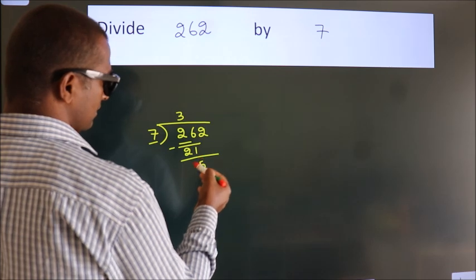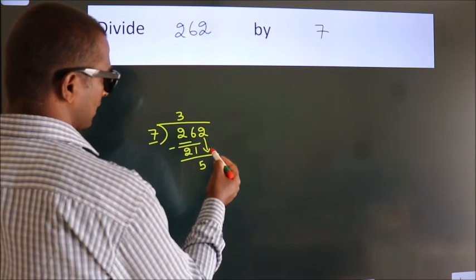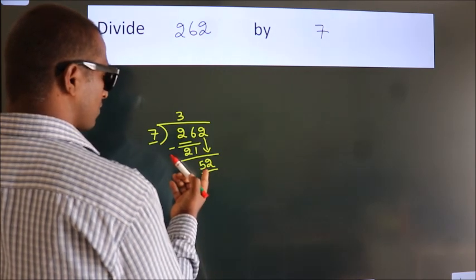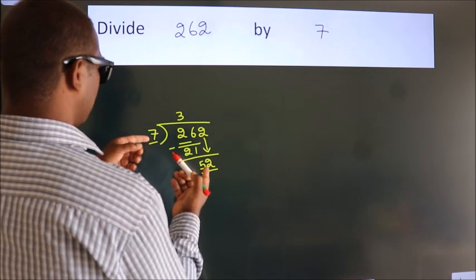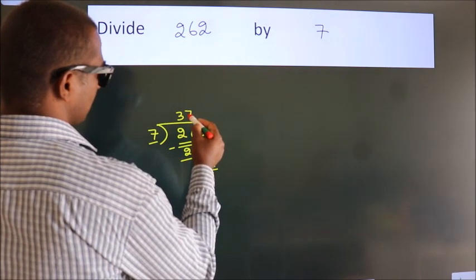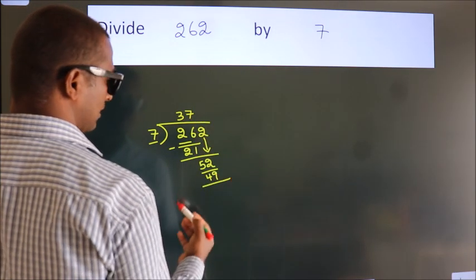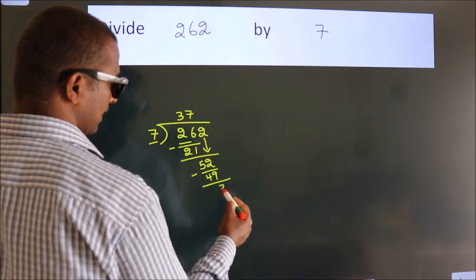After this, bring down the beside number. So, 2 down. So, 52. A number close to 52 in 7 table is 7 sevens 49. Now, we subtract. We get 3.